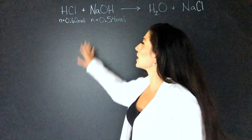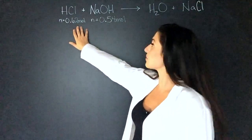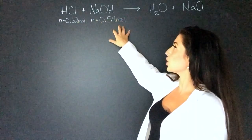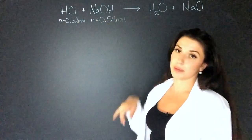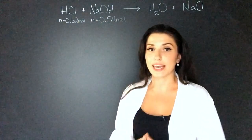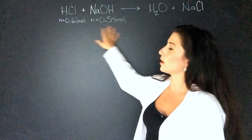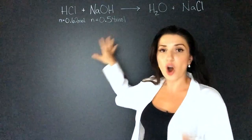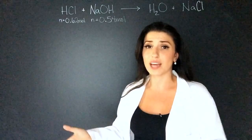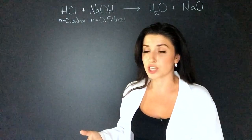The question told us that we have 0.62 moles of hydrochloric acid and 0.54 moles of sodium hydroxide. Now at the beginning of all these questions, you're going to want to find the moles of all the reactants in order to find how much product is made, but also to find the limiting reagent.